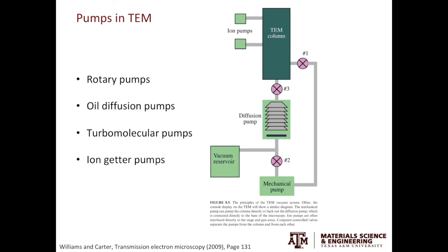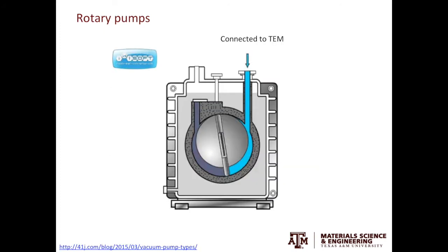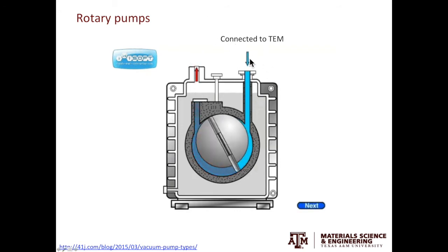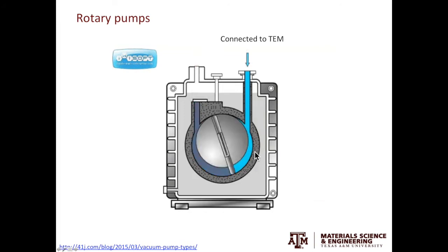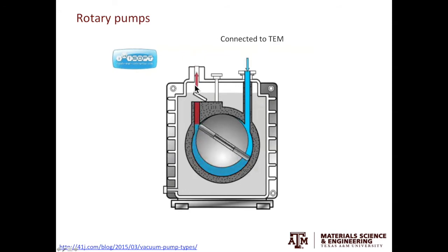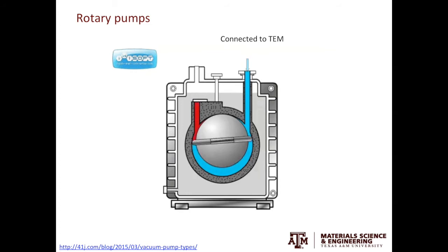Starting with the rotary pumps. As the name suggests, the rotary pump has a rotor. From this animation, we can see the TEM is connected to here. As the rotary arm spins around, the air is pushed from one end to another and expelled to the atmosphere. In this way, we can get a better vacuum from the TEM end.